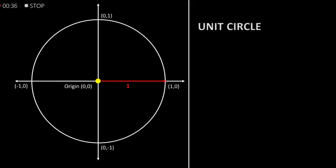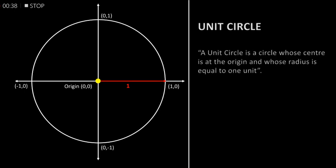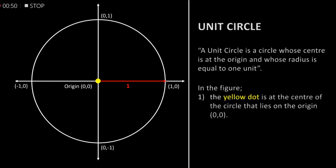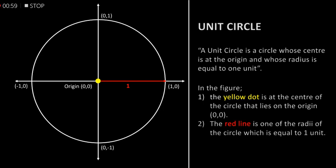A unit circle is a circle whose center is at the origin and whose radius is equal to one unit. In the figure, the yellow dot is at the center of the circle that lies on the origin. The red line is one of the radii of the circle which is equal to one unit.